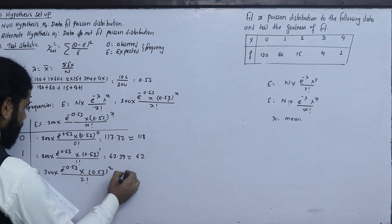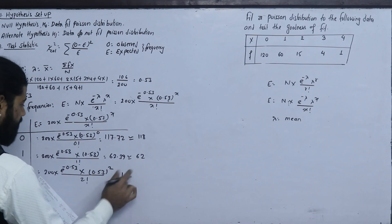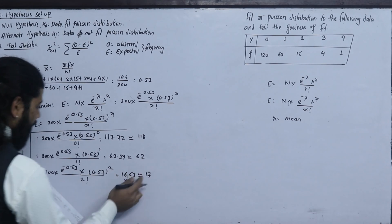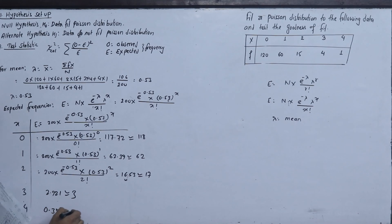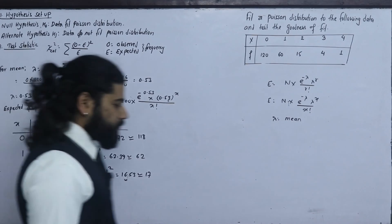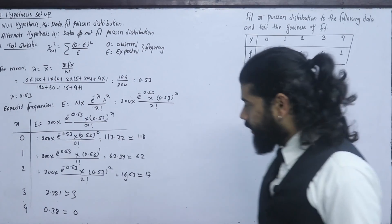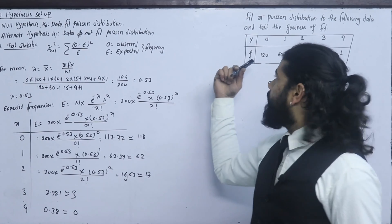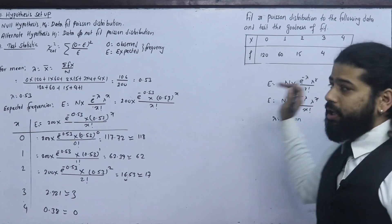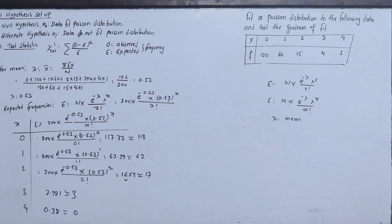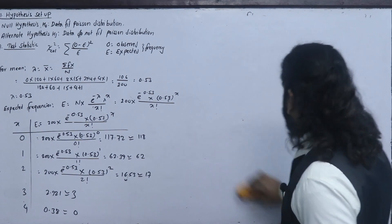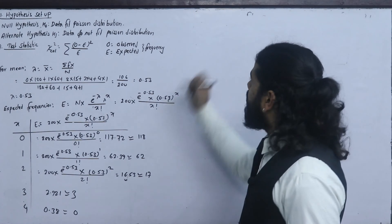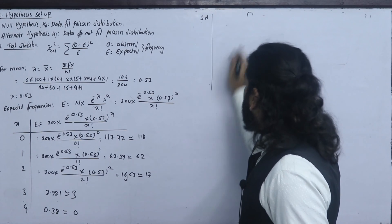For x=3, the expected frequency comes out to approximately 16.53, which we round to 17. For x=4, the expected frequency is 2.921, which we round to 3. So the expected frequencies are 118, 118, 62, 17, 3, and then the remaining combined as 6.